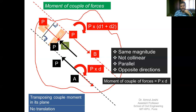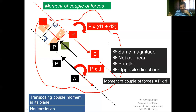Whenever two forces satisfying these four conditions act on a body, they result only in a rotational tendency at any point on the body, not accompanied by translation, as the tendency of translation is nullified by the equal and opposite forces. With this, we will stop today's short video. Thank you.